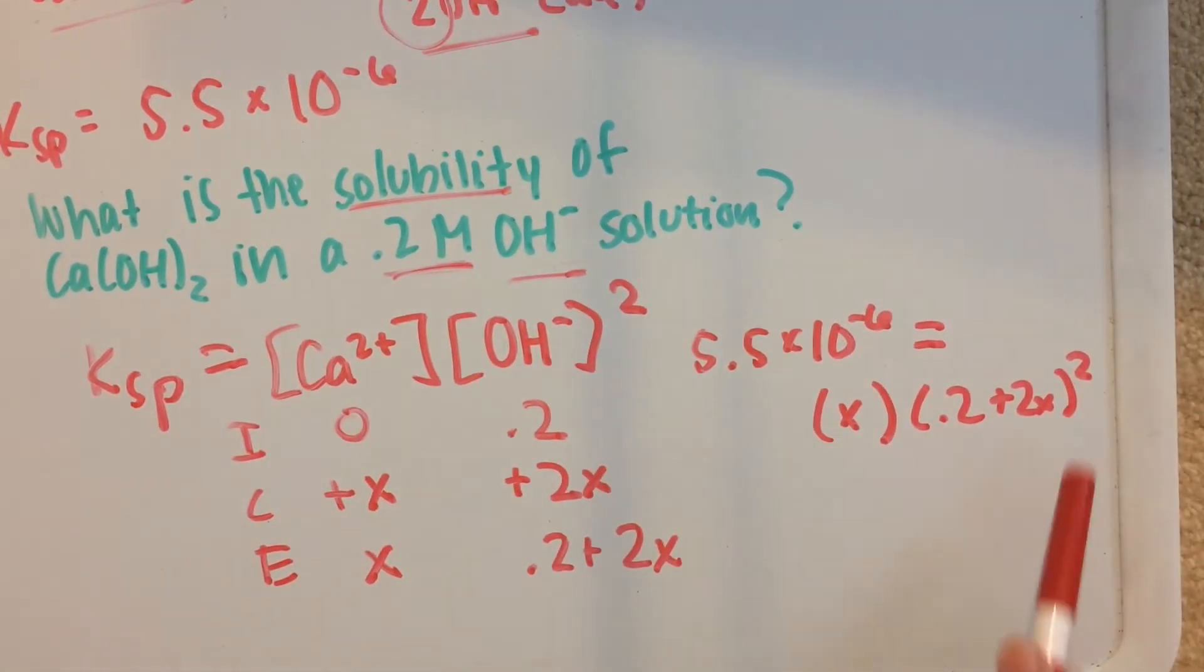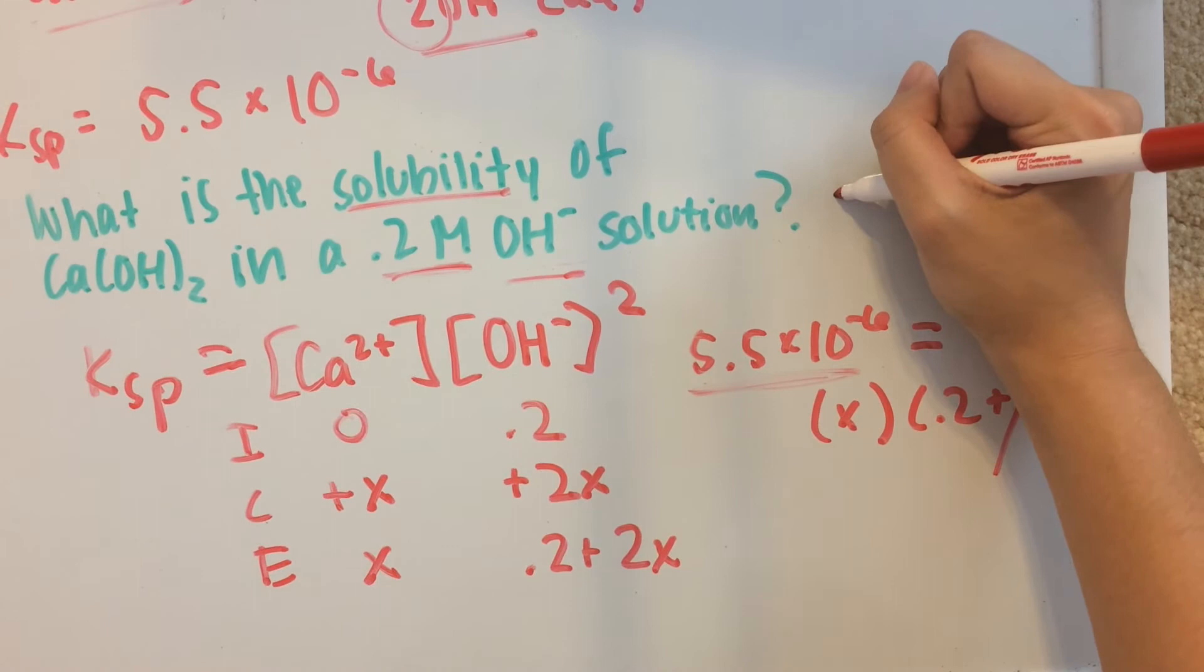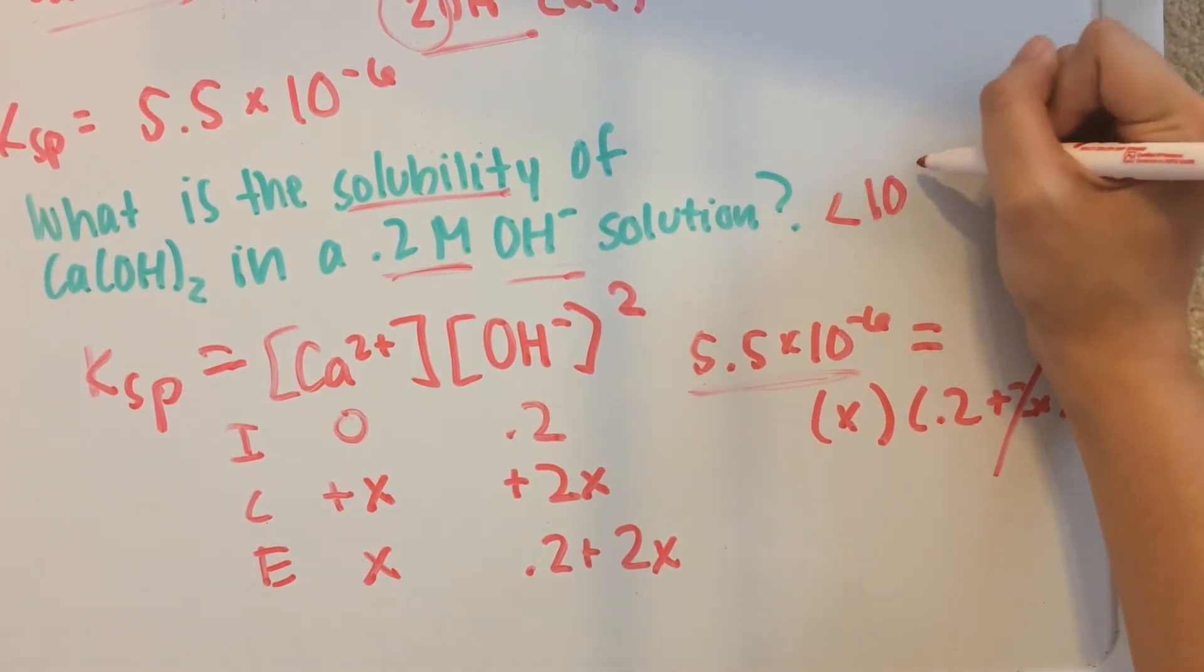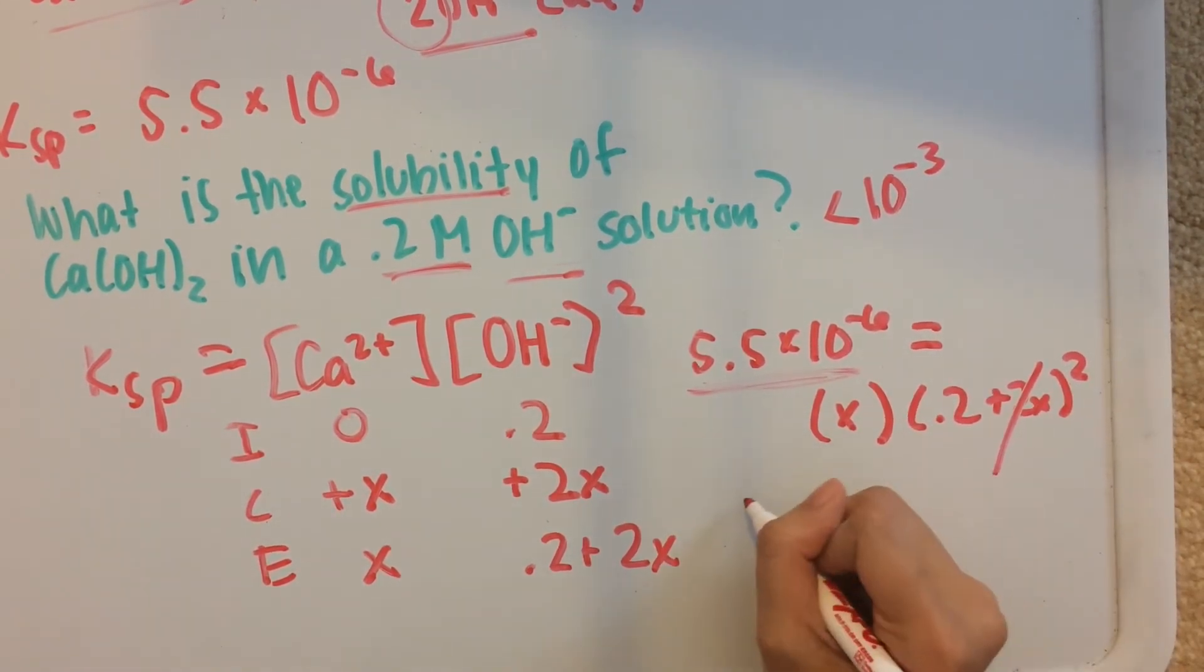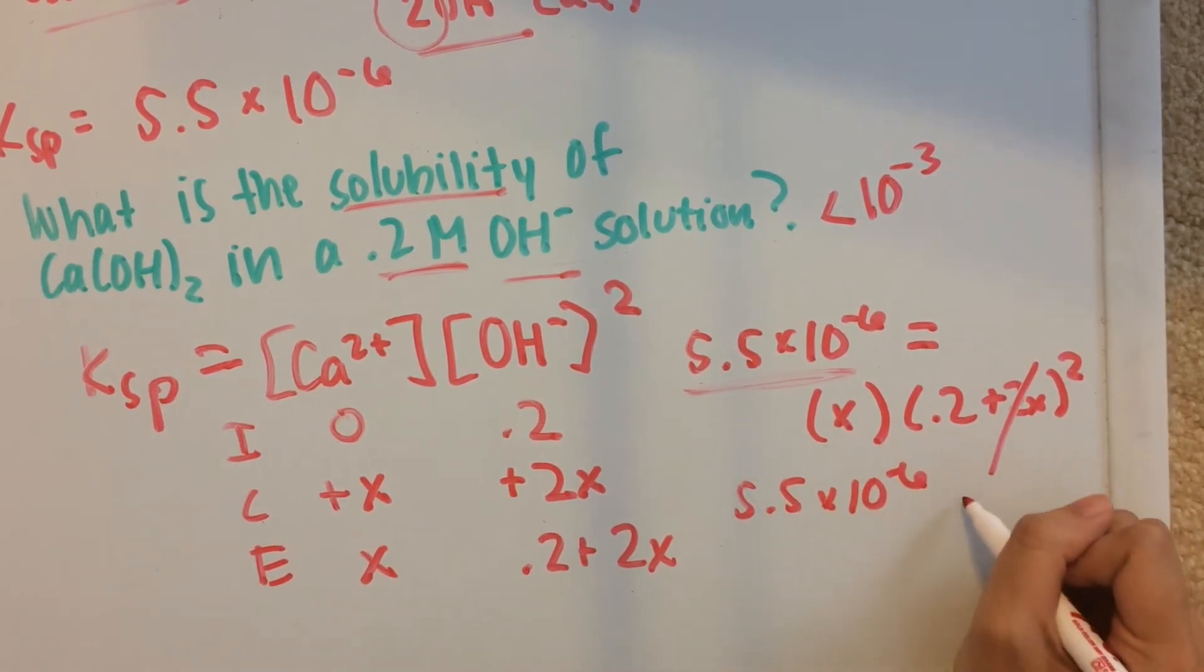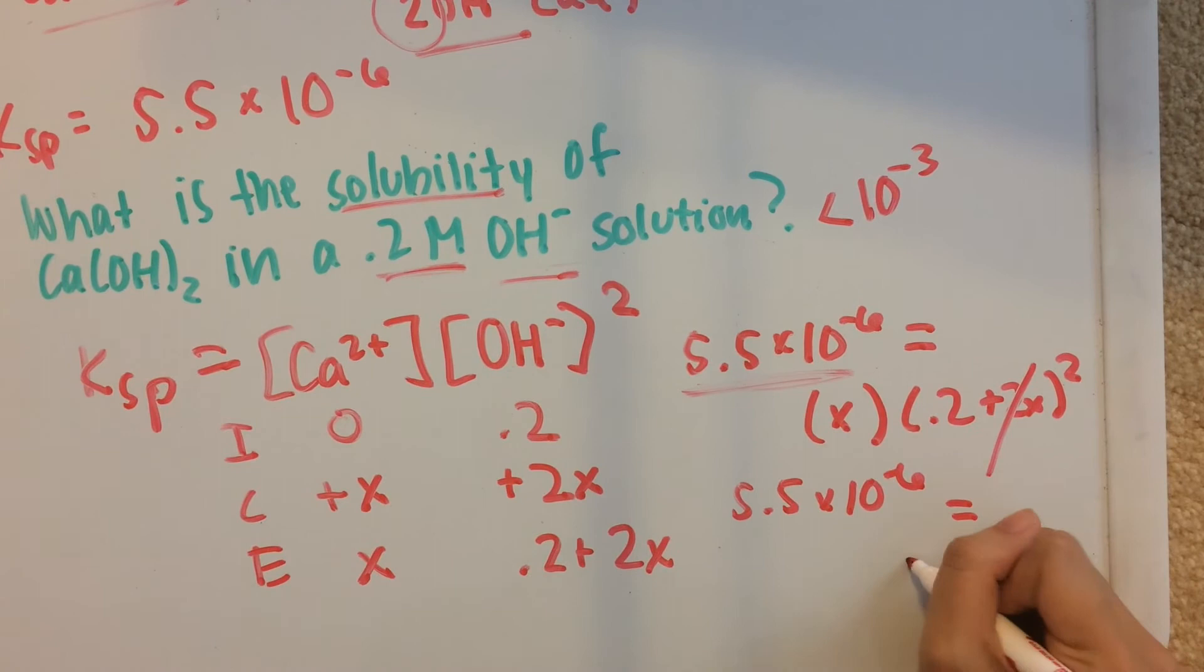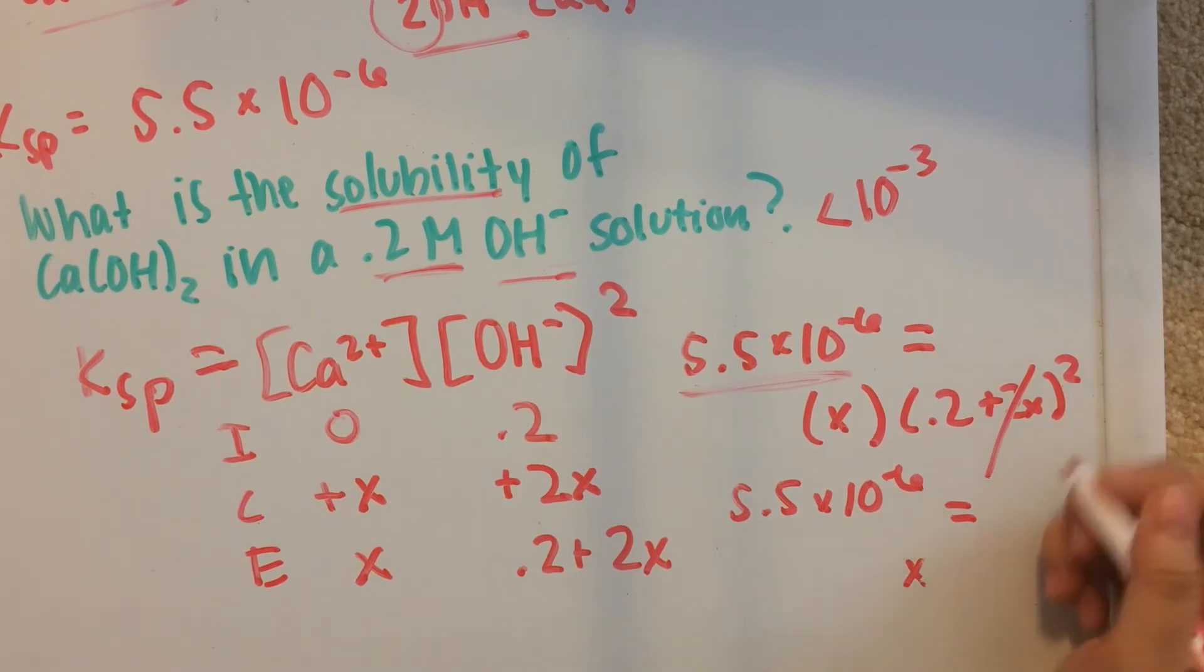We can drop the 2x because our Ksp value is very small. Remember, when anything is less than 1 times 10⁻³, we can just drop the x value here. So now we have 5.5 times 10⁻⁶ equals x times (0.2) squared, and this is basically just 0.04.